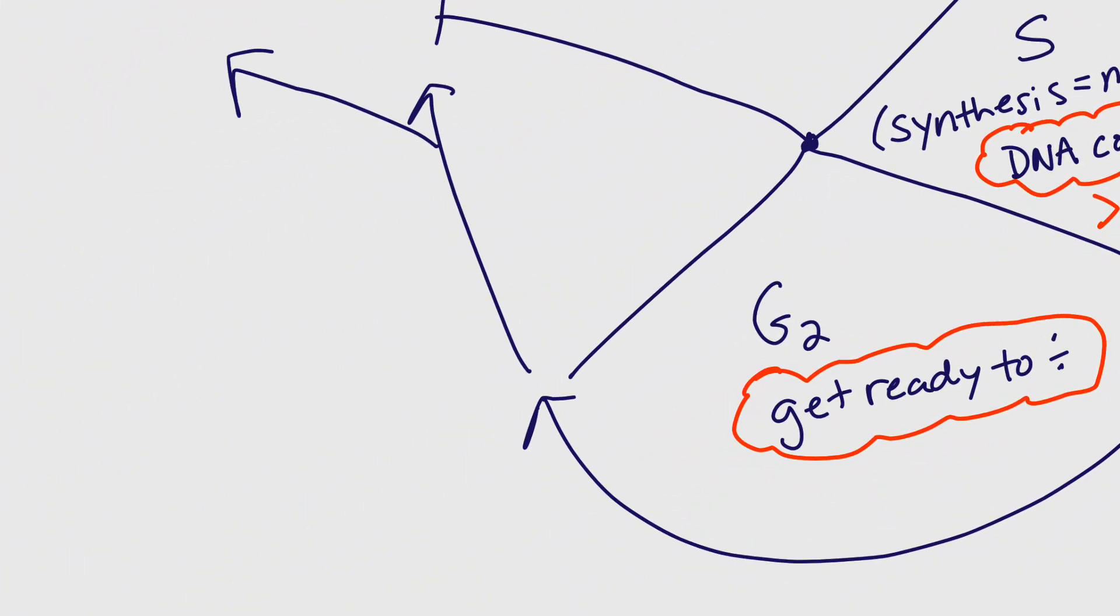If the cell gets through G2 and the signals are right, it's going to go into what we're going to call M phase. Which I'm going to split up into multiple phases, which is why I'm not writing the M in the pie. So M phase is two parts. This is the mitosis part, which is the nucleus dividing, nuclear division.